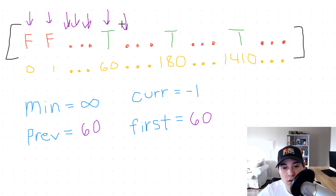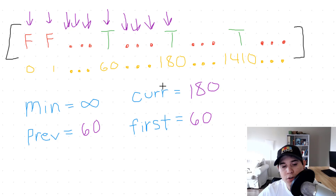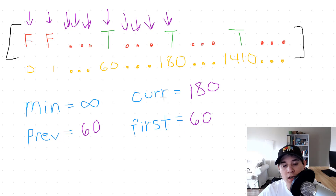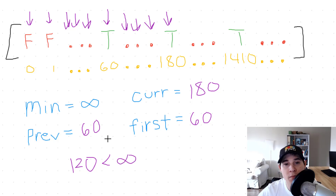We iterate all the way up to 180 and get another true. Now we set 180 to be our current. Since both current and previous have a value, we compute the difference: 180 minus 60 equals 120. Since 120 is less than infinity, which is our current minimum value, we overwrite the min variable.